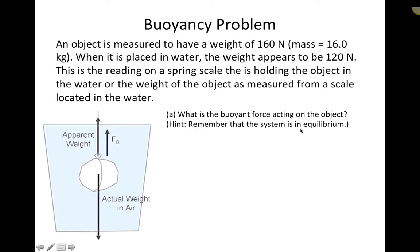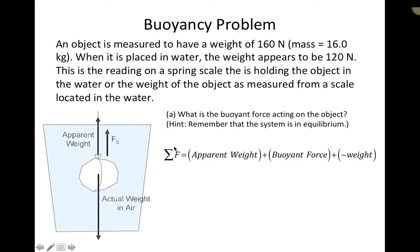The hint is: remember that the system is in equilibrium. When you see something like this, you have to think about Newton's second law, which says to look at the sum of forces acting on the object. Any force acting up is positive, and any force acting down is negative. So we have the apparent weight — the tension in the string — plus the buoyant force upward, minus the actual weight of the object pulling down.